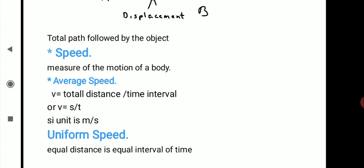The next point is uniform speed. When an object travels equal distances in equal intervals of time, then that object is said to be moving at uniform speed. So if any object covers equal distances in the same time intervals, we say that the object has uniform speed.